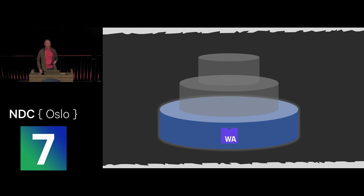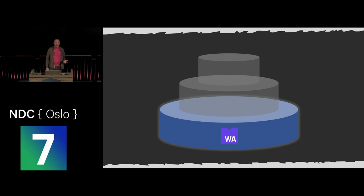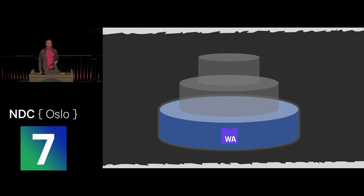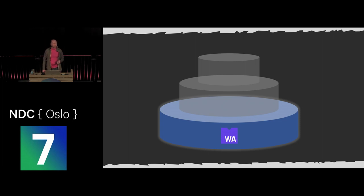WebAssembly is a bytecode format for the web supported in all browsers — desktop and mobile — for two years now. It's not experimental; it's well established. You compile your code from whatever language to WebAssembly, which is designed for performance and simplicity, running the same across all browsers and potentially getting to within a factor of two of native speed.